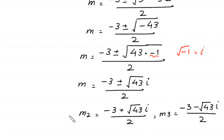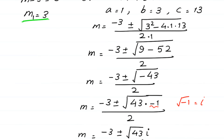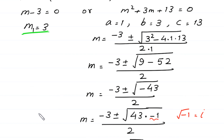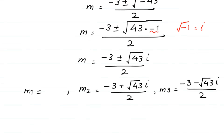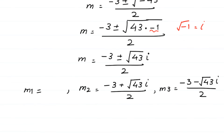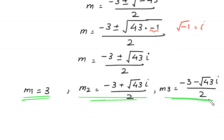We have already found m₁ equals 3. So these are the three solutions of this cubic equation: m₁ equals 3, m₂ equals (negative 3 plus √43·i) divided by 2, and m₃ equals (negative 3 minus √43·i) divided by 2.